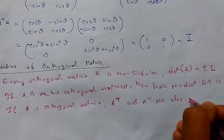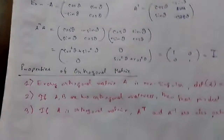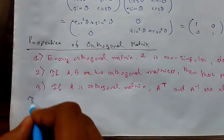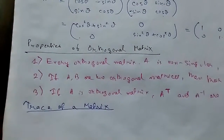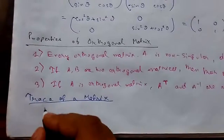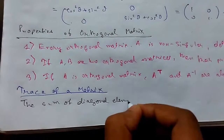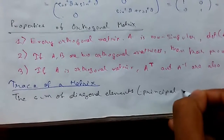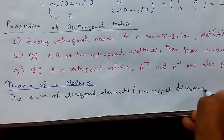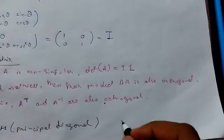Now a small definition — trace of a matrix. Trace of a matrix is simply the sum of the diagonal elements, that is we consider the principal diagonal elements. It is denoted by tr(A).